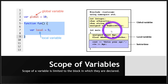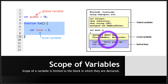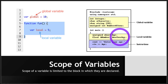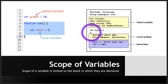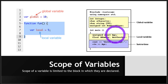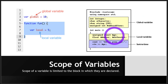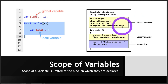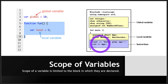But these two variables — age and number — are local variables. They are defined inside the bracket of the main program, so they cannot be used outside the main. They can only be used from inside the main, not in any other function or block outside.